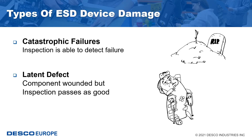Latent defects occur when ESD weakens or wounds a component to the point where it will still function properly during testing, but over time the wounded component may cause poor system performance. Later, after final inspection — perhaps in the hands of your customer — a latent defect may become a catastrophic failure. Not only is this type of damage hard to find, but it also severely affects the reputation of your company's product. Latent defects can cause upset or intermittent failures and be very frustrating, including the customer returning a product with a problem which then again passes all inspection.